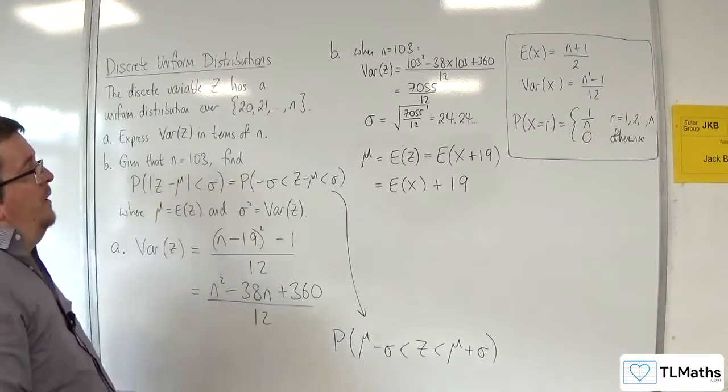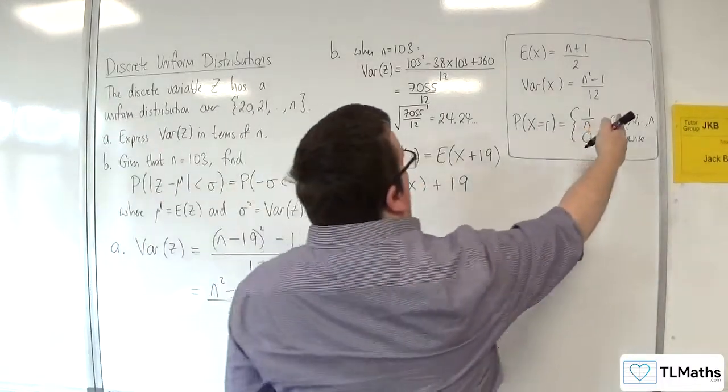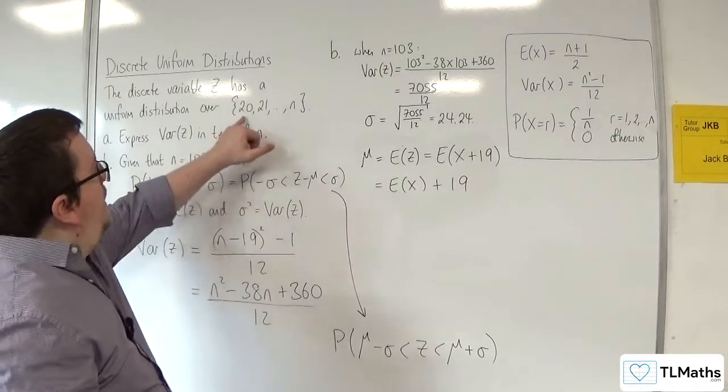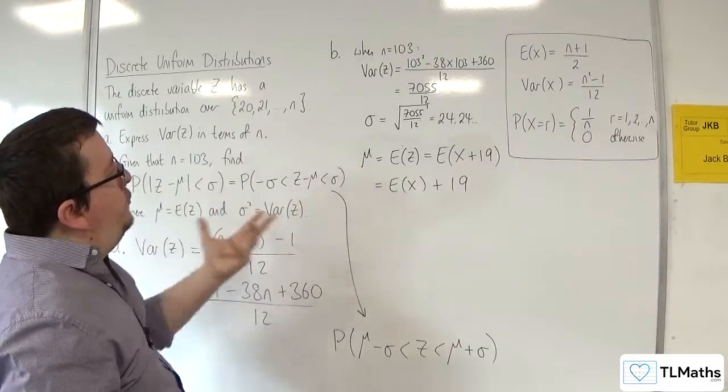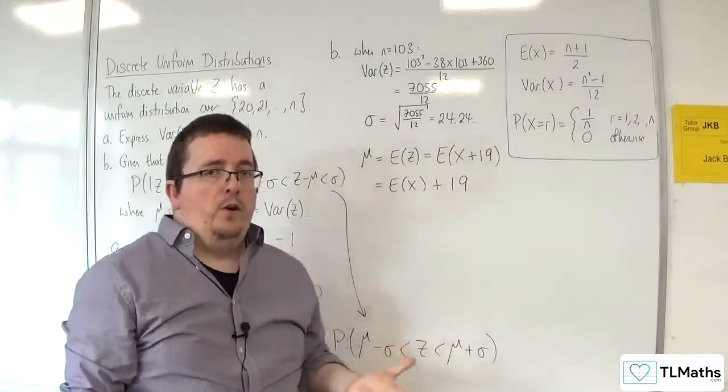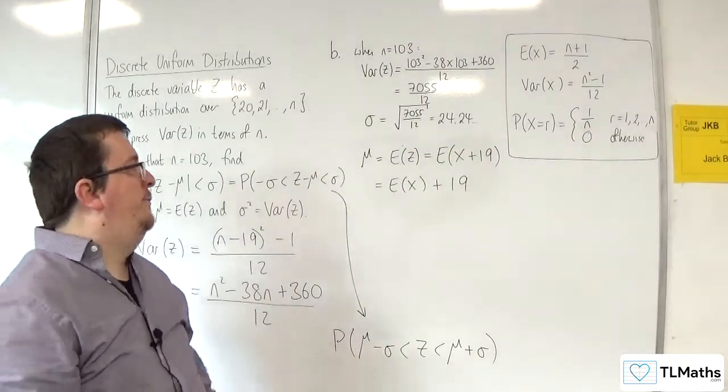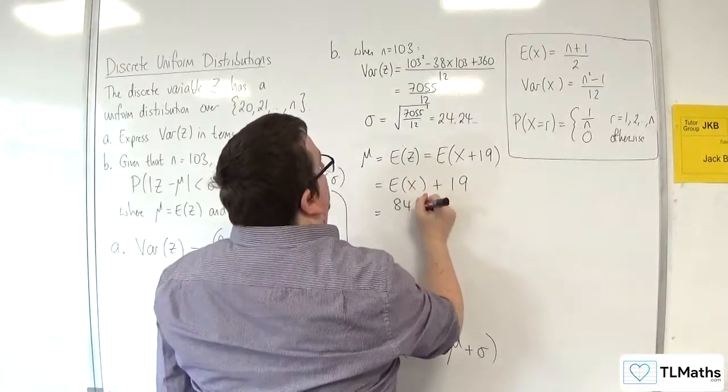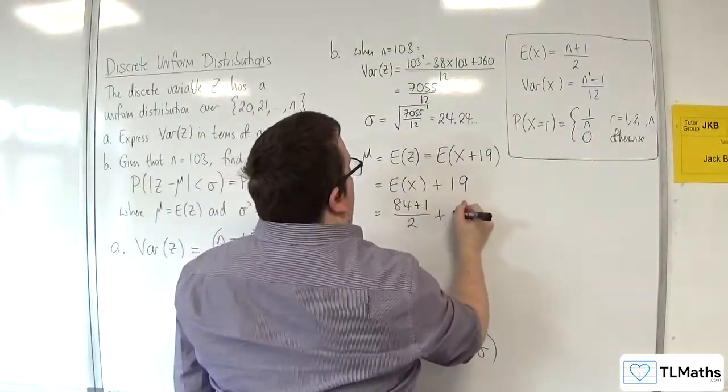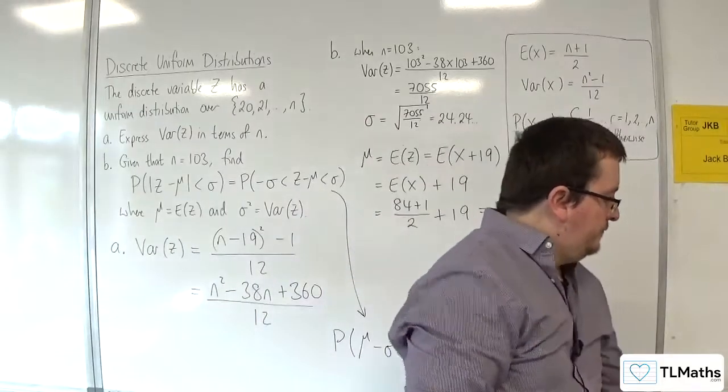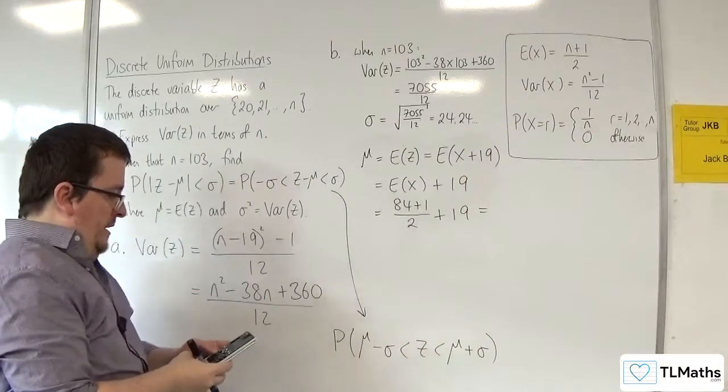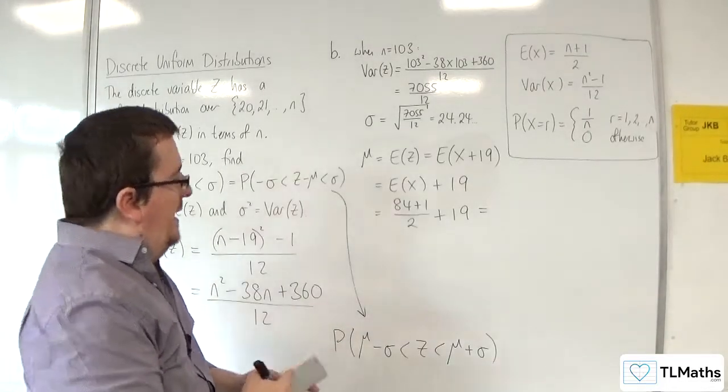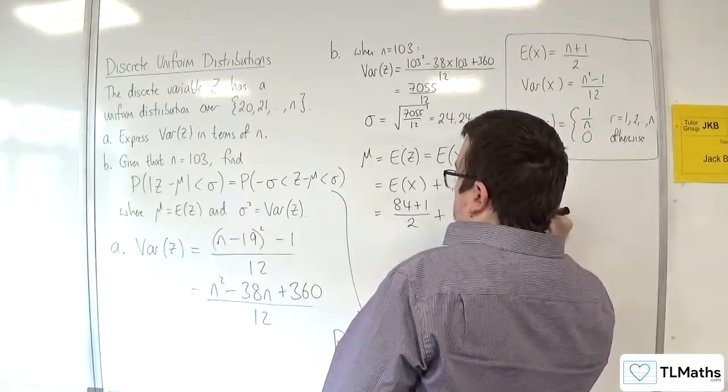What's E(x)? Well here we're not going up from 1 up to 103, because this is 20 up to 103 and we've shifted it. So it needs to be 19 short of 103, which is 84. We need to use 84 here: 84 plus 1 over 2, and then we've got to add on the 19. So 84 plus 1 divided by 2 plus the 19, and we get 61.5.